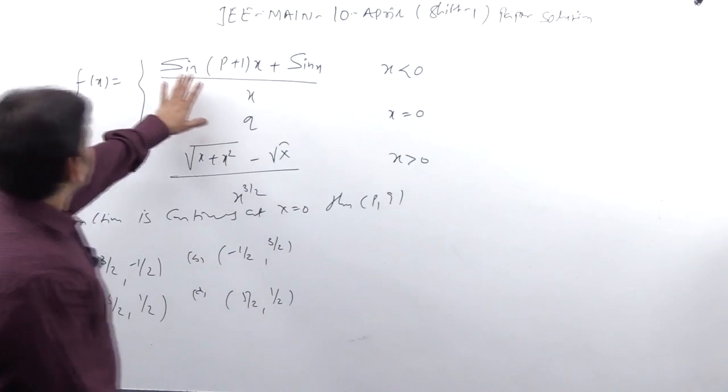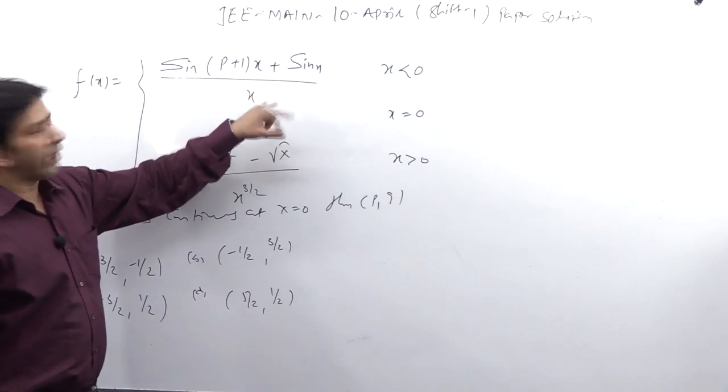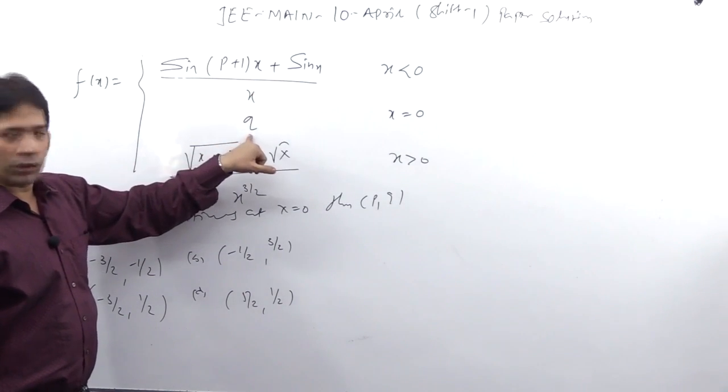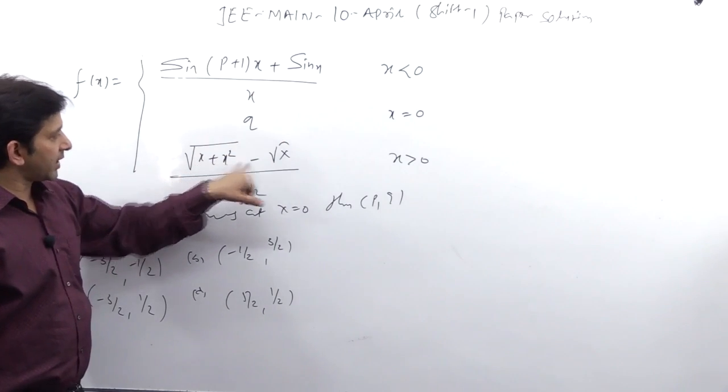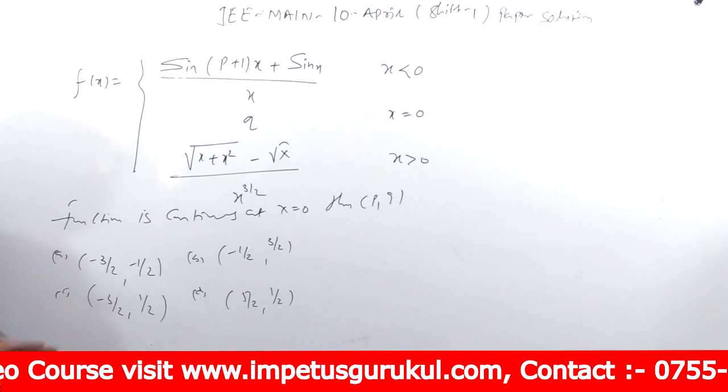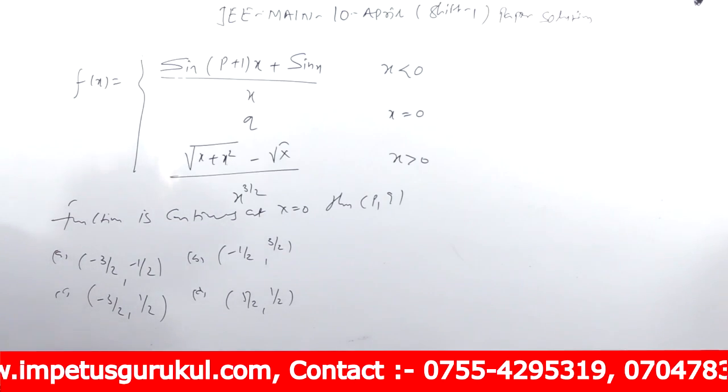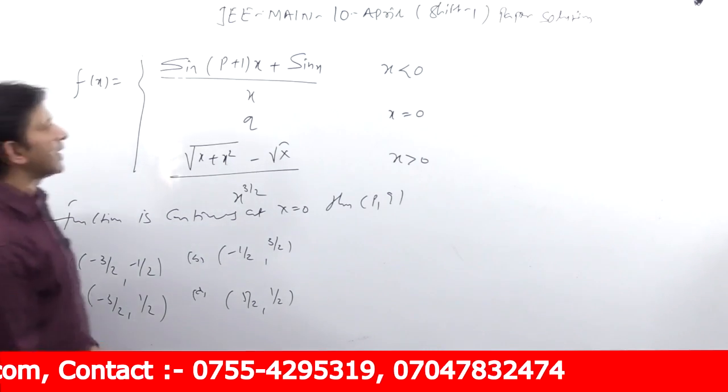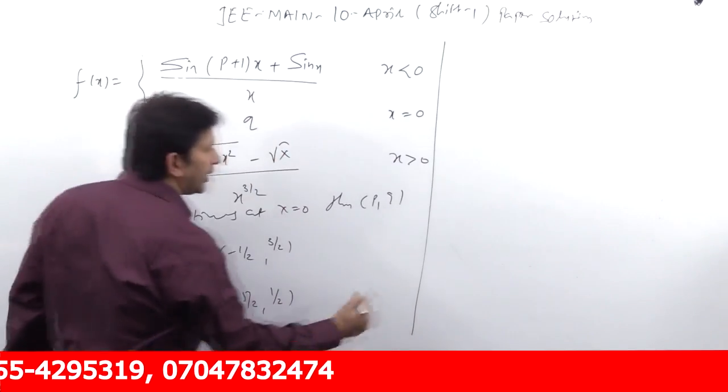Continuity question is, what question is? Sin(P+1)x plus sin x upon x, x less than 0; x equal to 0, q; root(x + x²) minus root x upon x, x greater than 0. Continuous at x equal to 0, find P, Q. Now, this is what we can do, simple.